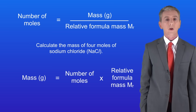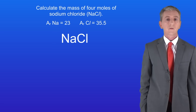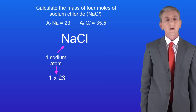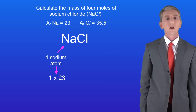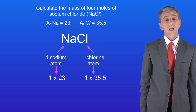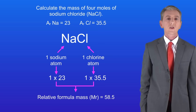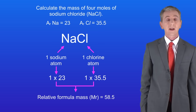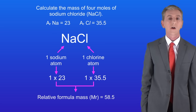First we need to calculate the relative formula mass of sodium chloride. We've got one atom of sodium and the relative atomic mass of sodium is 23. We've also got one atom of chlorine and the relative atomic mass of chlorine is 35.5. Adding these together gives us a relative formula mass of 58.5 for sodium chloride.